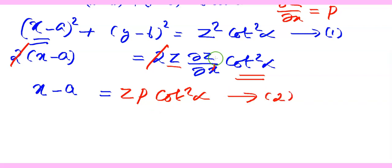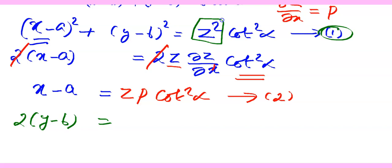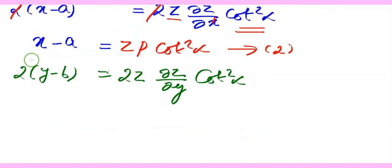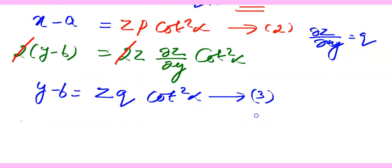Now let us differentiate equation 1 partially with respect to y. On differentiating, x is constant, so the derivative of (x−a)² is 0. Differentiating (y−b)² with respect to y gives 2(y−b). The derivative of z²cot²α with respect to y is 2z·(∂z/∂y)·cot²α. On dividing both sides by 2 and using the notation ∂z/∂y = q, we get y−b = zq·cot²α. This is equation 3.